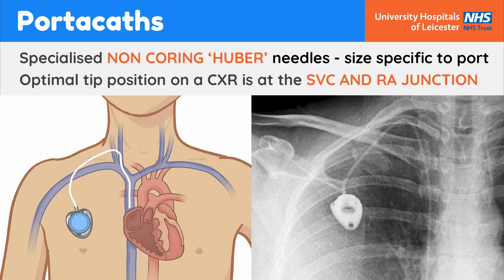When a portagath is accessed, a special non-coring Huber needle is passed through the skin and into the device chamber which lies below a layer of silicone. The design of these needles prevents small pieces of skin or silicone from being lodged in the catheter line. The size of the portagath is dependent upon the size of the child, because the accessing needle size is specific to the depth of the device chamber. Optimal line tip position on a chest x-ray is at the SVC-RA junction.